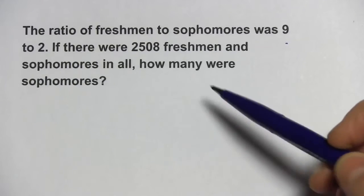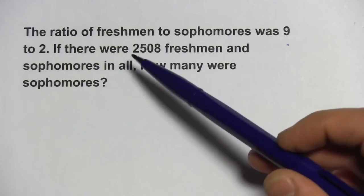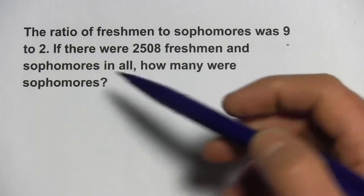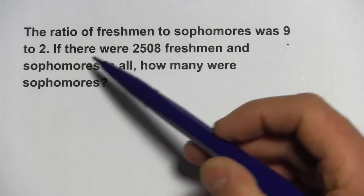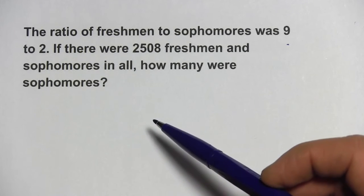Here we have some more problems with ratios and proportions. This first one says that the ratio of freshmen to sophomores was 9 to 2. If there were 2,508 freshmen and sophomores in all, how many were sophomores?